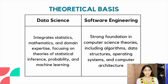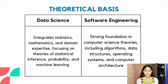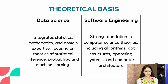What are the core concepts you need to excel in these two fields? Data science integrates statistics, mathematics and domain expertise, focusing on theories of statistical inference, probability and machine learning — so if you're interested in maths and statistics, this is the field for you. Software engineering requires a strong foundation in computer science theories including algorithms, data structures, operating systems and computer architecture.